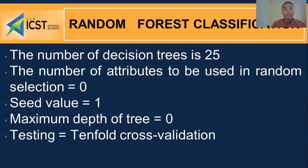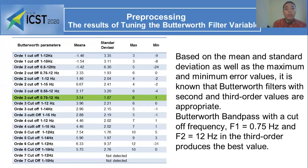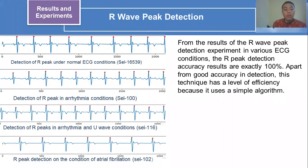The result of tuning the Butterworth filter variables based on the mean, standard deviation, maximum, and minimum error values shows that the Butterworth filter with second-order values is appropriate. From the R-peak detection experiment under various ECG conditions, the R-peak detection accuracy result is exactly 100 percent.